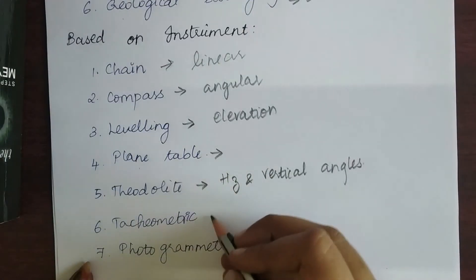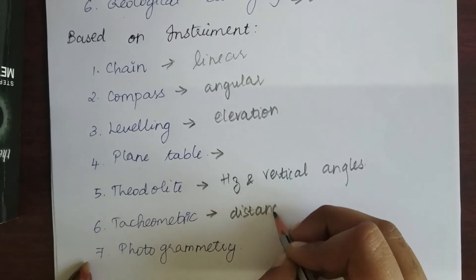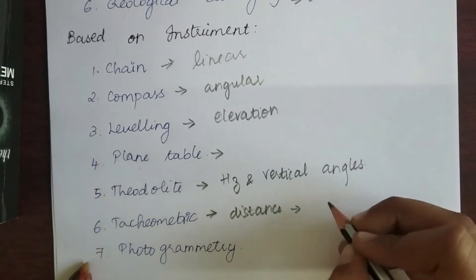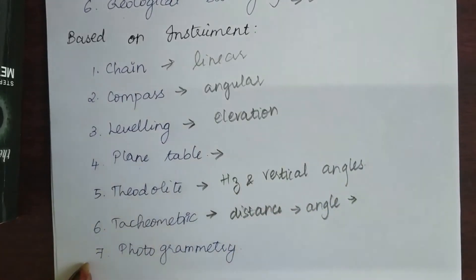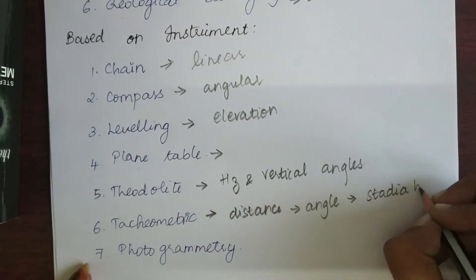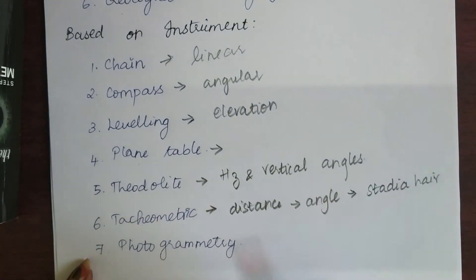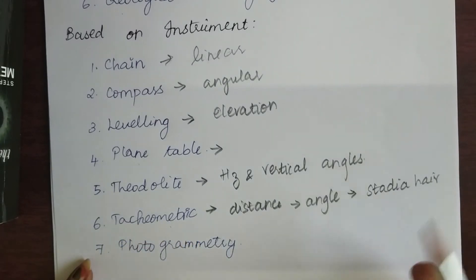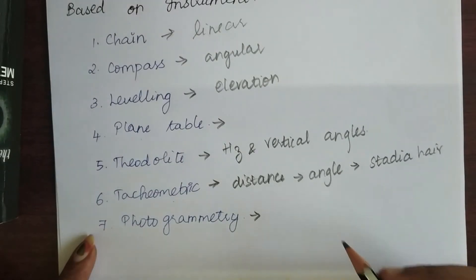Next is tachymetric surveying. Tachymetric surveying is used to find the distance between two objects. Angles are also used here, but the difference is the arrangement of the stadia hairs is different. Using a different type of stadia hair, we are able to arrive at the distance between two objects. We will also look at tachymetric surveying in the upcoming chapters.